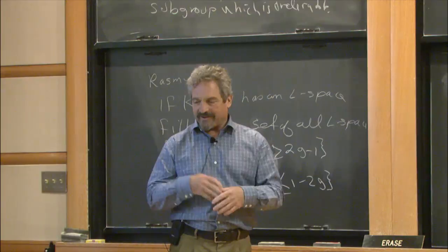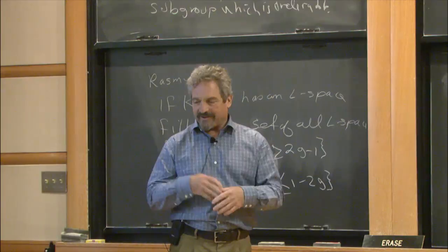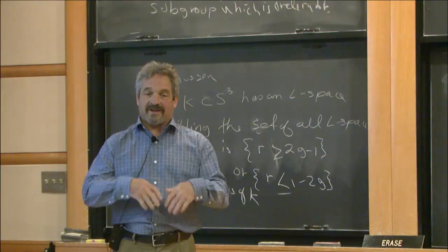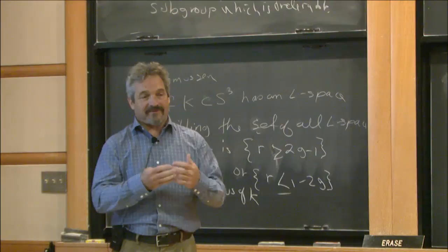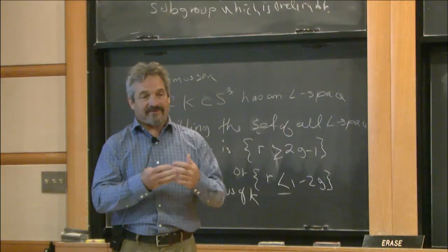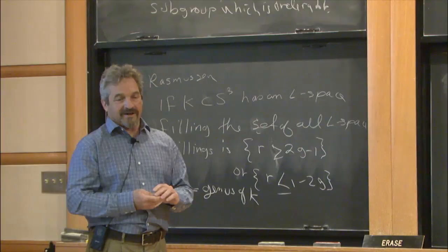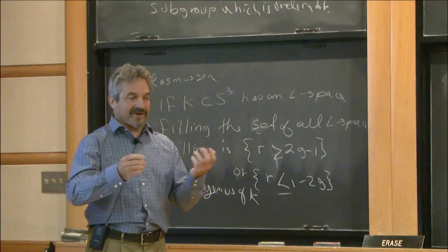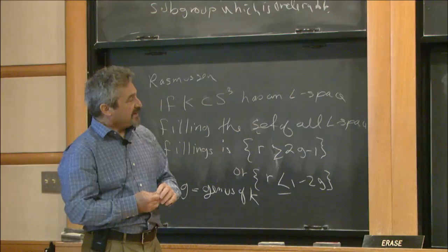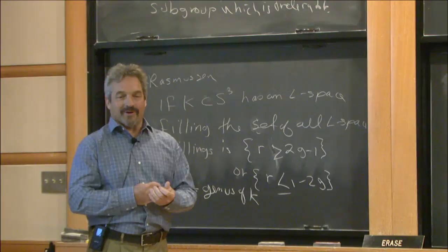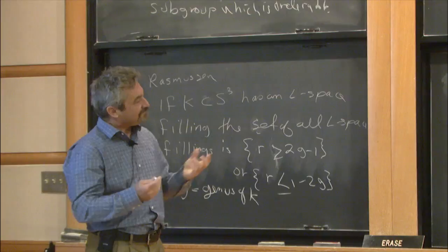There are quite a few papers coming out recently proving that groups are orderable, and sadly they all use pretty much the same technique: construct an action of the group on the circle, lift it to an action on the real line. It's an obvious fact that if a group acts faithfully on the real line it's orderable — just pull the order back. The only constructions we have so far for finding interesting actions on the circle are by looking at representations into SL2R, then using PSL2R acting on the circle to construct the ordering. As you'll see, that's not going to be good enough to resolve the conjecture, but that's also what we're doing.